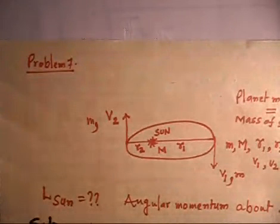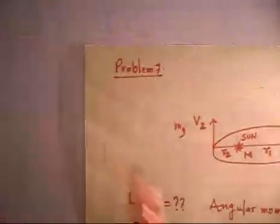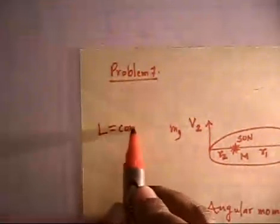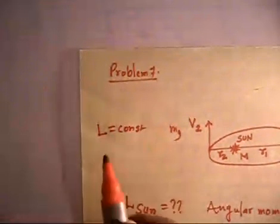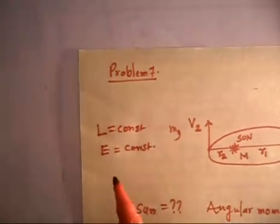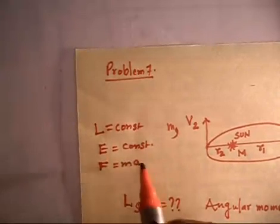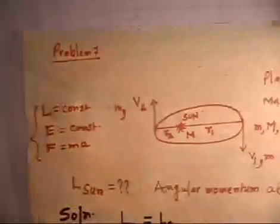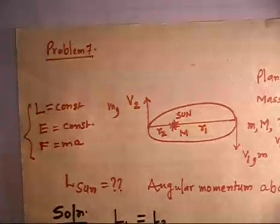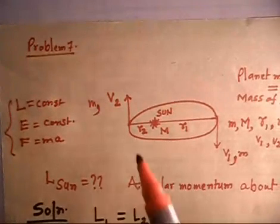Let me write these down. The first equation comes from angular momentum conservation: L is constant. The second equation comes from energy conservation: total energy is constant. The third equation comes from Newton's law: force equals mass times acceleration. These three equations are sufficient to solve any kind of problem in the gravitation chapter.